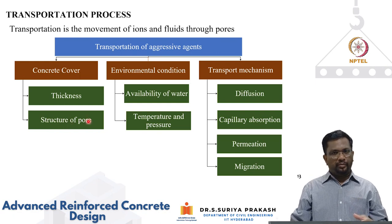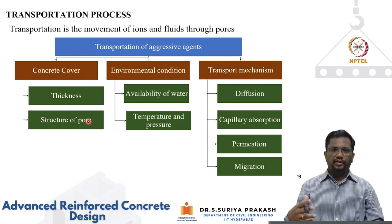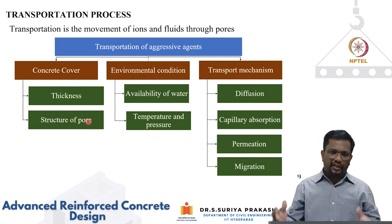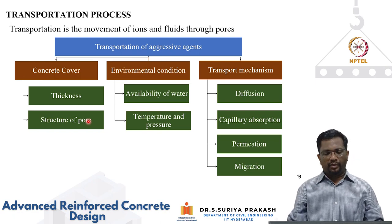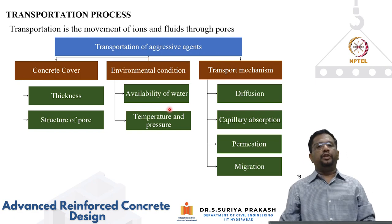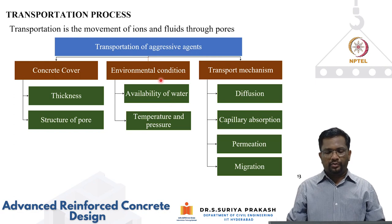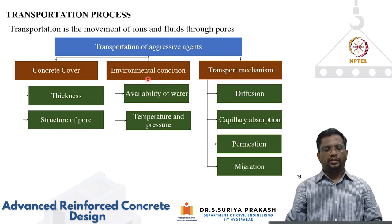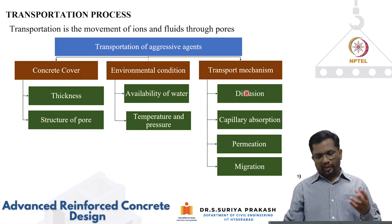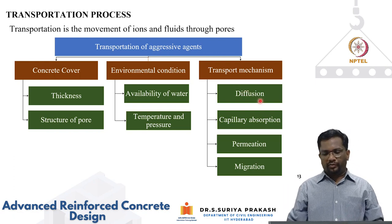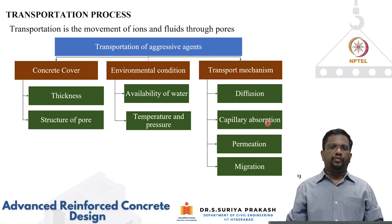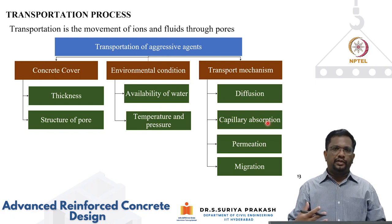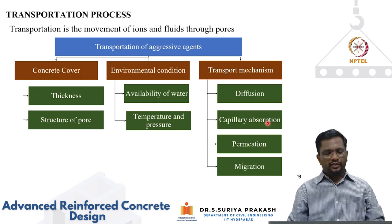During concreting and compaction, water can migrate to the top surface and sides of formwork, resulting in higher water-cement ratio and lower concrete strength in the cover zone. Environmental conditions such as moisture availability, temperature, and pressure also aid transportation of aggressive agents. There are four main transportation mechanisms: diffusion, capillary absorption, permeation, and migration. These four mechanisms drive the movement of ions and fluids through the pores, allowing them to reach different depths and leading to both concrete and reinforcement deterioration.